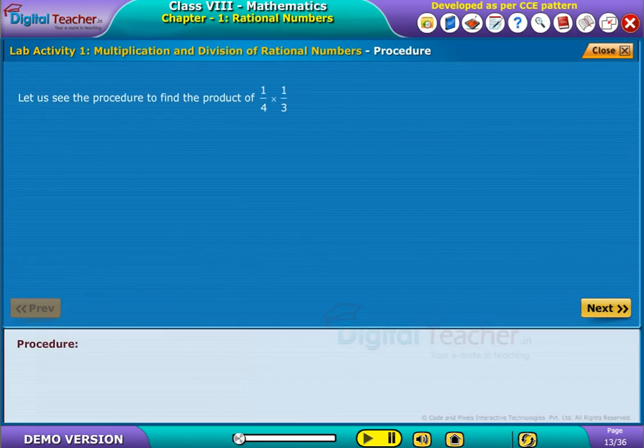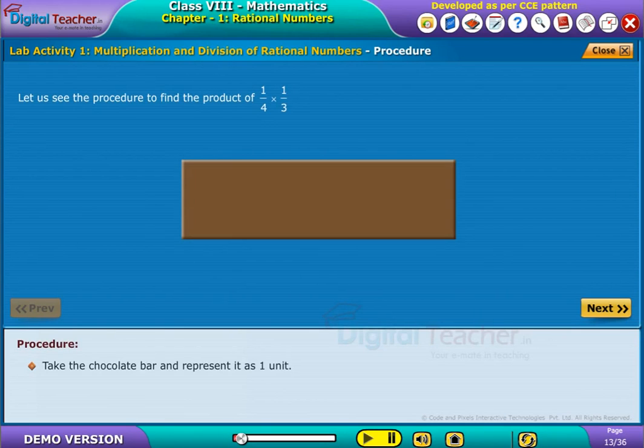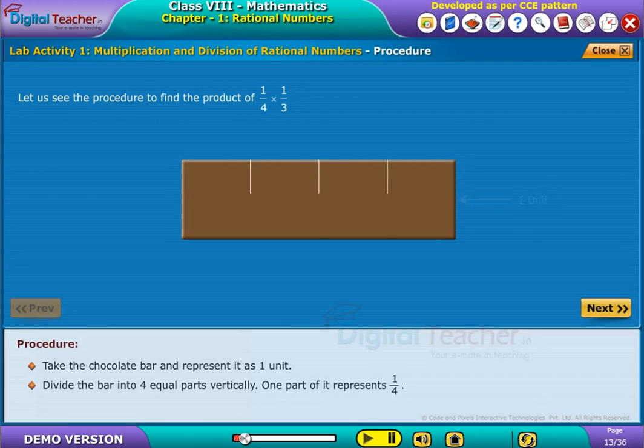Let us see the procedure to find the product of 1 by 4 and 1 by 3. Take the chocolate bar and represent it as one unit. Divide the bar into four equal parts vertically. One part of it represents 1 by 4.